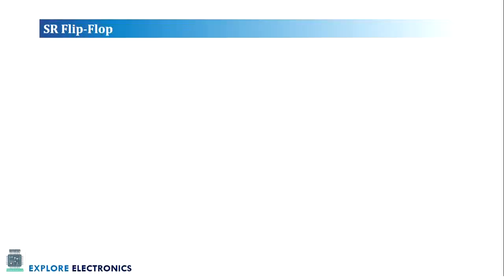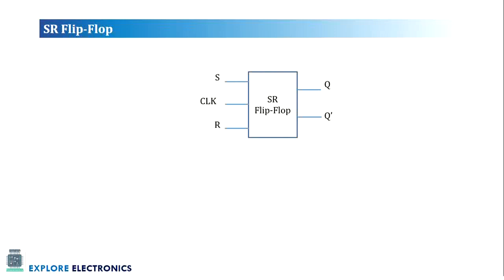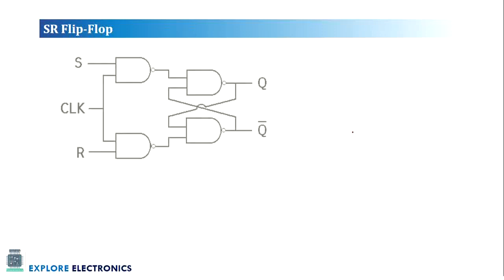Hello everyone, welcome to this video. In this video let me explain SR flip-flop. SR flip-flop is a kind of flip-flop having inputs S and R, and clock is another input for any sequential circuit. The outputs are Q and Q bar, which are complementary to each other — if Q is 0, Q bar should be 1. Let us understand the working of SR flip-flop with the circuit diagram.